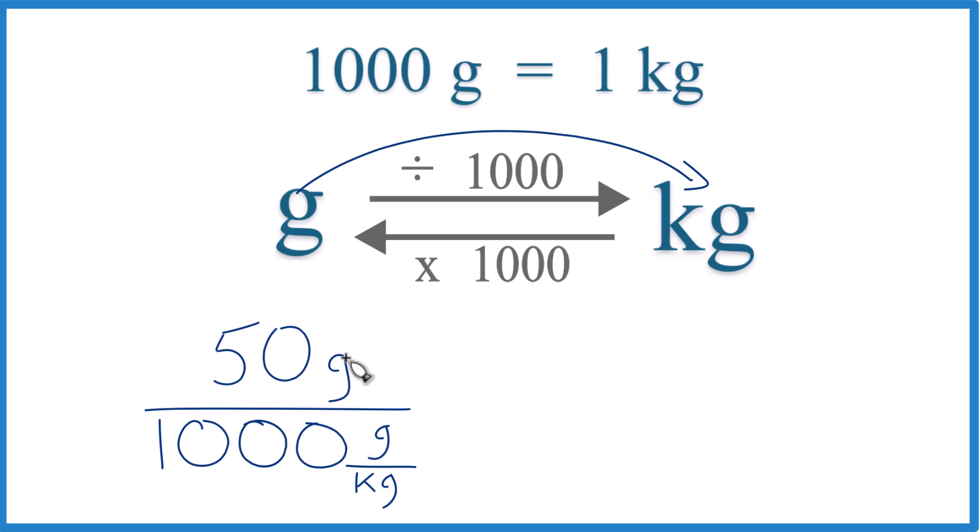Now grams on the top and the bottom, they cancel out. We're going to be left with kilograms. So we're dividing by 1,000.